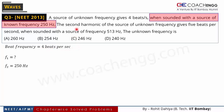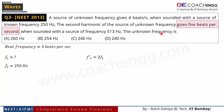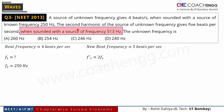The second harmonic of the source of unknown frequency — so we take the unknown frequency f1 and consider its second harmonic, meaning f1 multiplied by 2. When this second harmonic is used, it gives 5 beats per second when sounded with a source of frequency 513 Hz. So when f1 and f2 (250 Hz) were added, we got 4 beats per second; and when 2f1 and 513 Hz are added, the beat frequency becomes 5 beats per second.